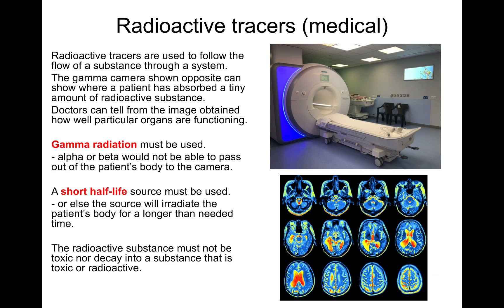Radioactive tracers are used in medical applications to follow the flow of a substance through a system. A gamma camera can show where a patient has absorbed a tiny amount of radioactive substance, and doctors can tell from the image obtained how well a particular organ is functioning. Gamma radiation must be used because alpha or beta would not be able to pass out of the patient's body to the camera. Putting alpha radiation inside someone would be a death sentence, and beta radiation would cause far too much ionizing damage to cells.